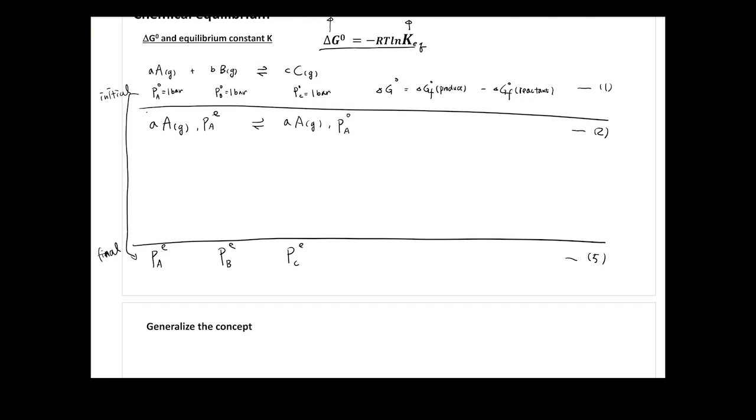If you want to reach equilibrium, you want A to start at Pa naught and eventually reach Pa equilibrium. Because you want A at equilibrium on the reactant side, you can swap and write this as Pa equilibrium to Pa naught — that's equation number two. Then do the same for B: Pb equilibrium to Pb naught on the reactant side. For C, you want C at equilibrium on the product side, so you write C going from standard state to equilibrium — equation four.